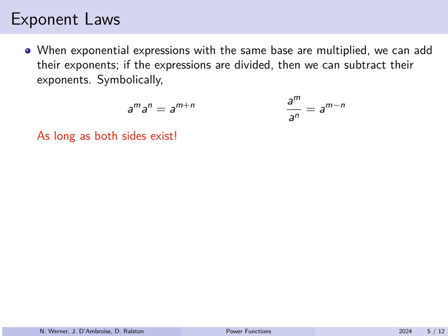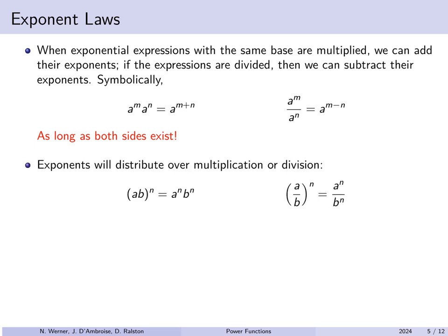Exponents also distribute over multiplication or division. Regardless of whether a and b are the same, (ab)^n = a^n · b^n, and (a/b)^n = a^n / b^n. Again, these hold as long as both sides exist — you don't want to divide by zero, and negative exponents may also create a potential problem on the left side.